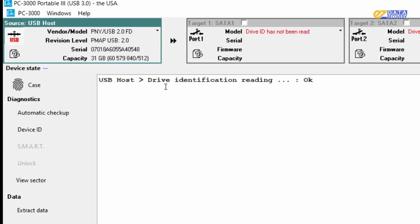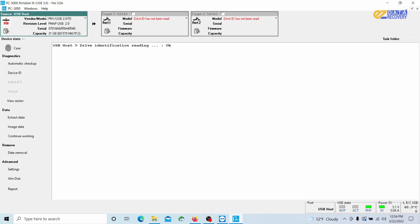Awesome. Now we see the vendor, the model, the revision level, the serial and capacity. That's perfect. Exactly what we need. Since we see this information, let's try using the data extractor tool.